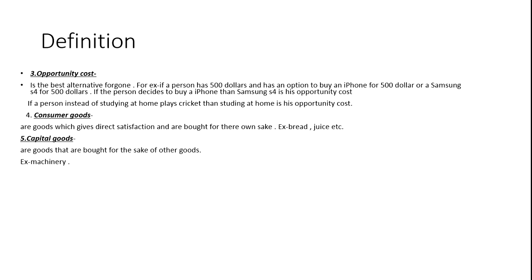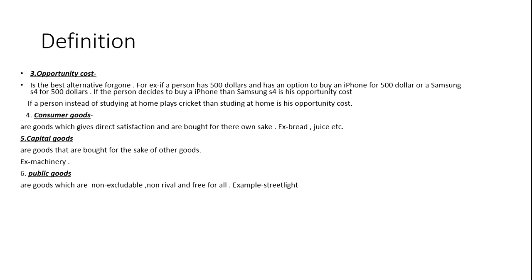You need capital goods to produce consumer goods. Now we come to the definition of public goods. Public goods are goods that are non-excludable and non-rival — free for all. When you go on the roads with your car, you are not charged for street lights, because they are public goods — they are available for everyone to use.